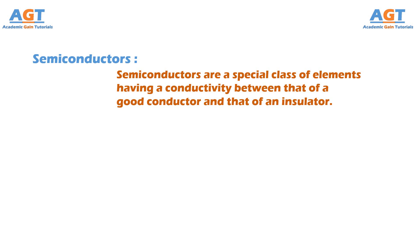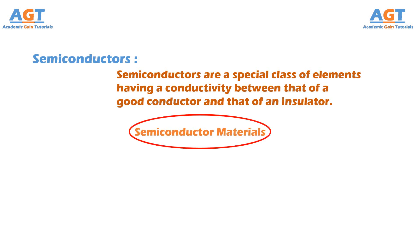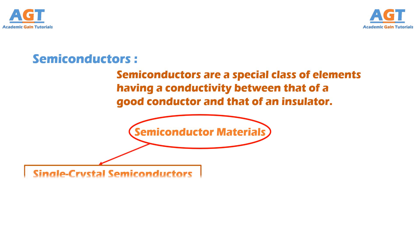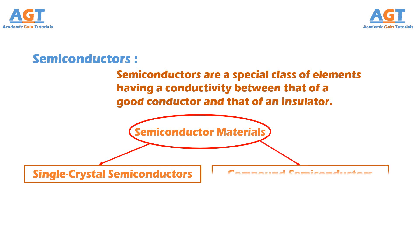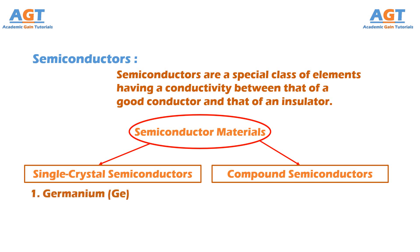In general, semiconductor materials fall into one of two classes: number one, single crystal semiconductors, and number two, compound semiconductors. Single crystal semiconductors, such as germanium and silicon, have a repetitive crystal structure.